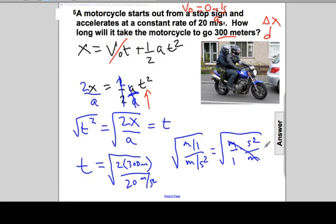Cancel the meters, cancel the meters, and I get the square root of second squared—everything under the radical—which are seconds. So it works out. Time is measured in seconds. We have to end up with units of seconds.